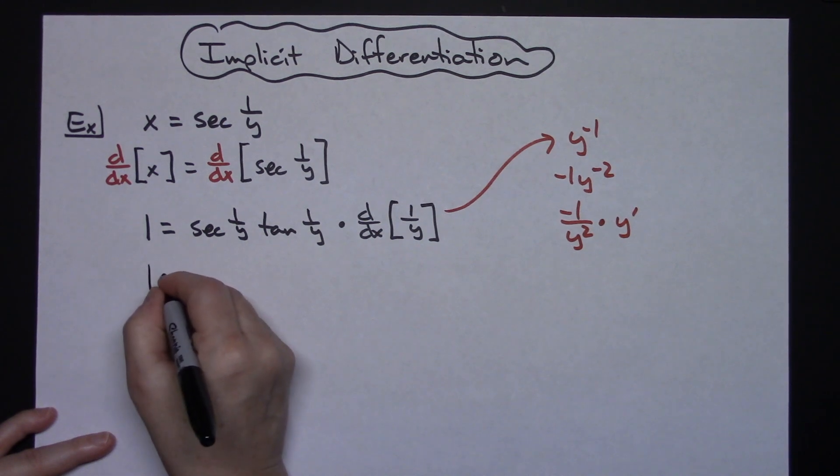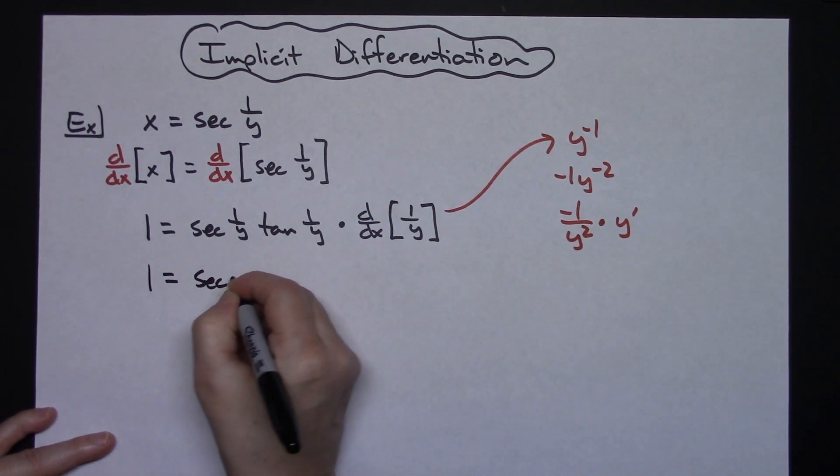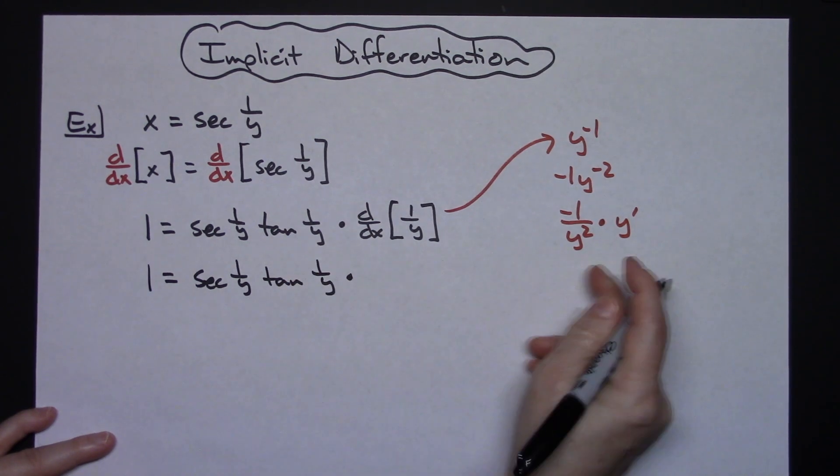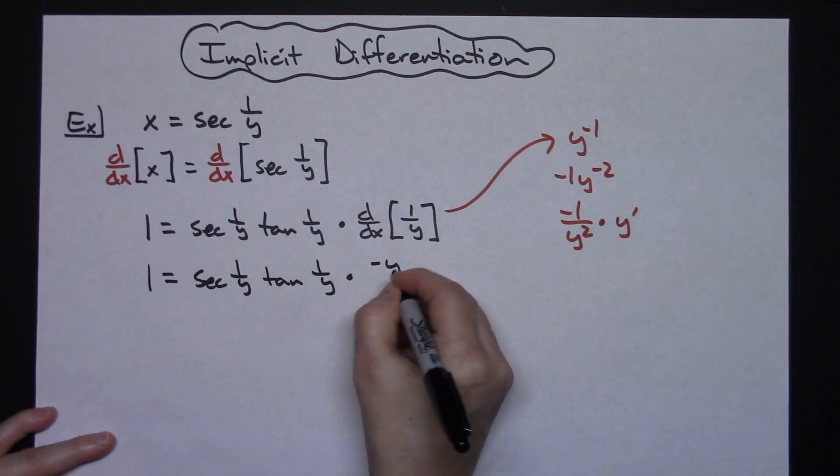So replacing that here I'm going to have 1 equals secant 1 over y tangent 1 over y and then times the negative y prime over y squared.